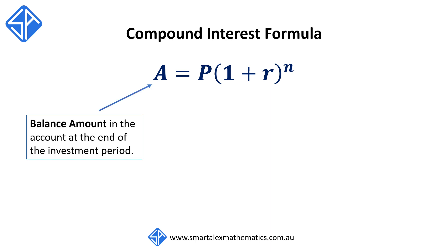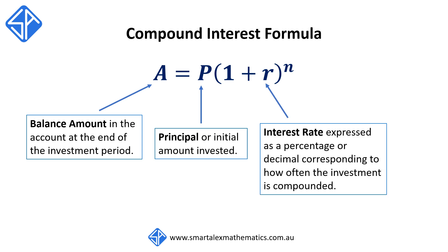A is the balance amount in the account at the end of the investment period. P is the principal or the initial amount invested. R is the interest rate and we must express this as a percentage or a decimal corresponding to how often the investment is compounded.